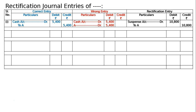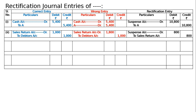Second one: the total of the sales return book was overcast by Rs. 800. The correct entry is sales returns account debited to debtor's account — take any amount above 800, say 1000. The sales returns account was debited 1800 to debtor's account. There is no mistake in any other account or amount. There is an excess debit of Rs. 800 in sales returns account, hence credit sales returns account 800, and suspense account debited 800.